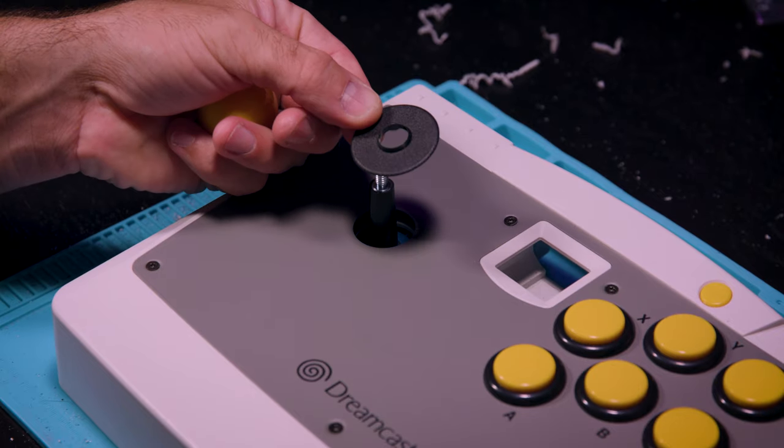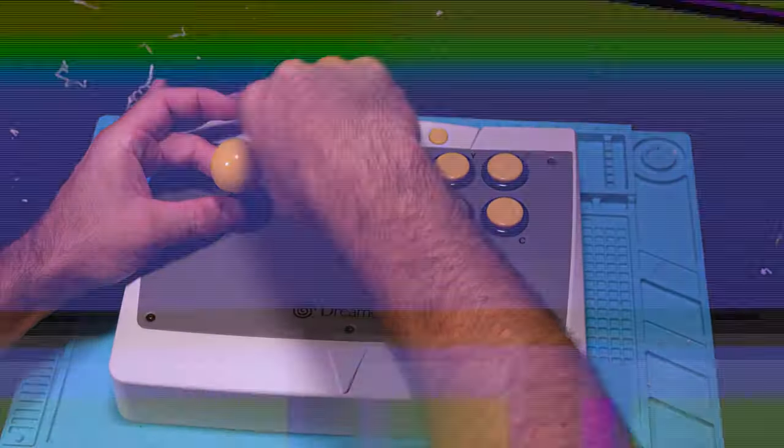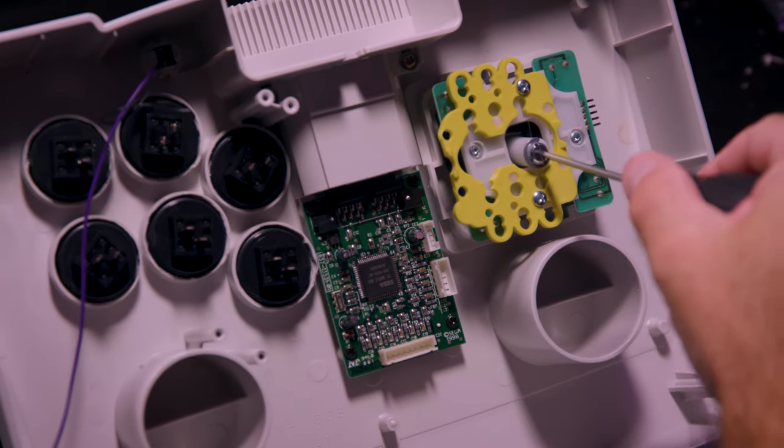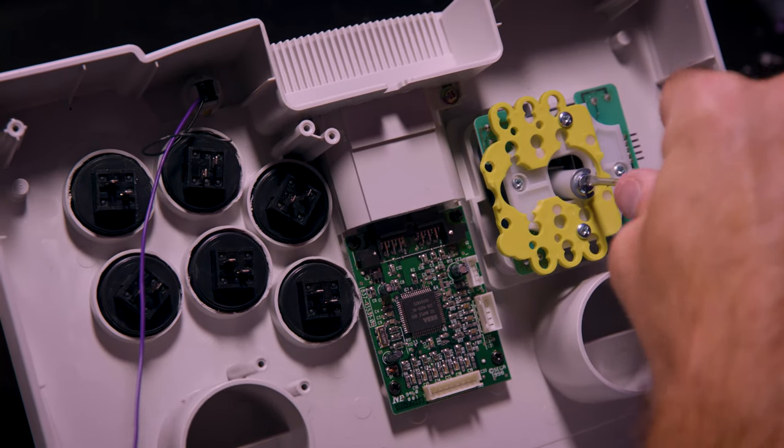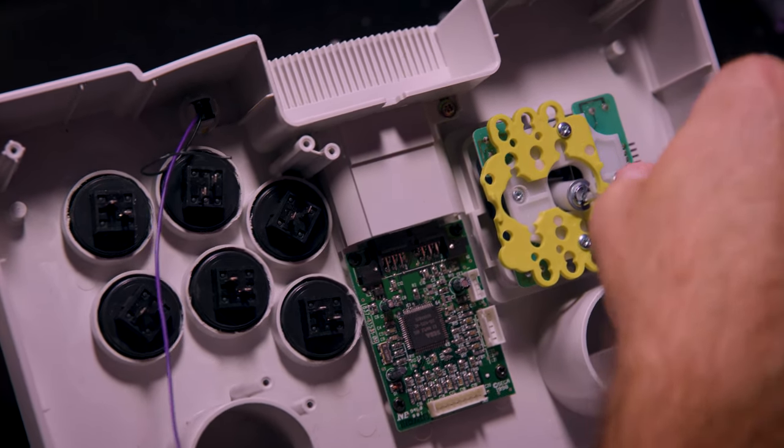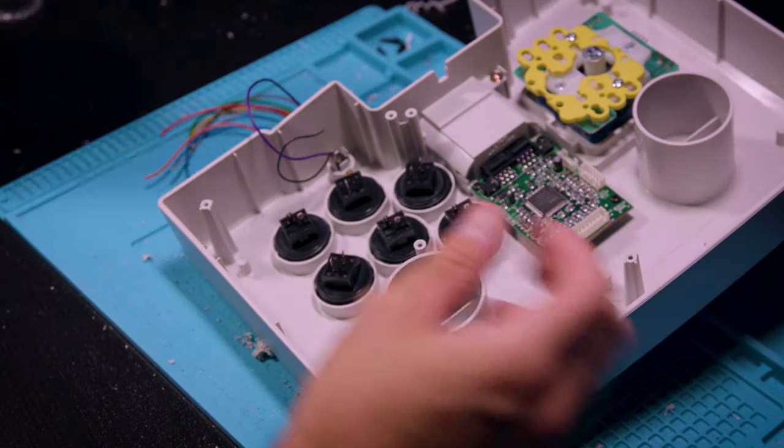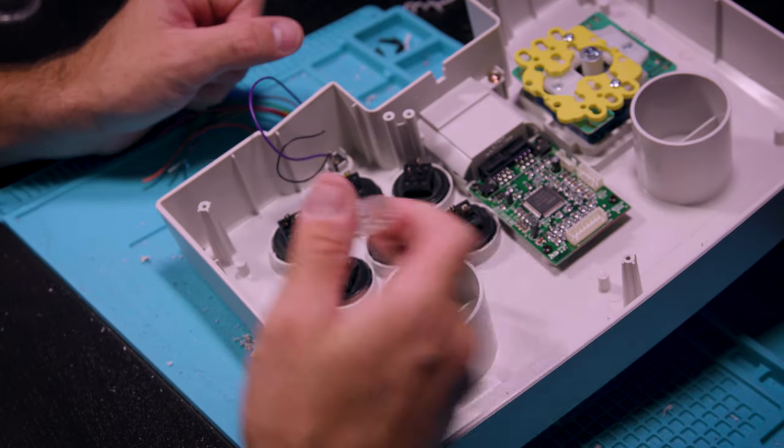You're going to want to put that dust washer on that came with your joystick. Don't forget, when you put that ball top on, you got to hold the back end of the joystick with a flat head, hold the ball top, and then just tighten that baby down to the right.